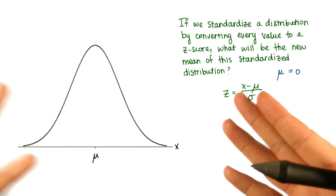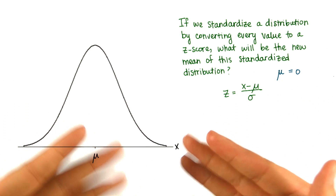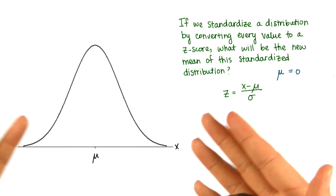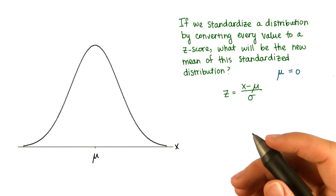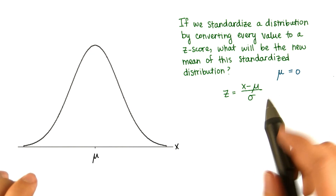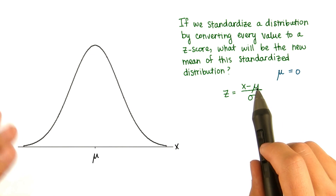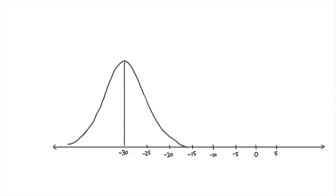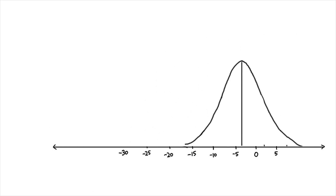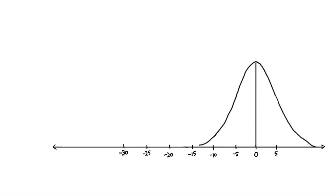What if we have a distribution with a mean of, say, negative 30? If we subtract negative 30, then we're essentially adding 30, and we shift the distribution right, again centering at 0.